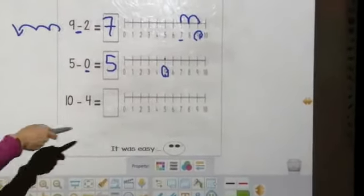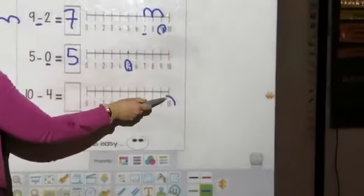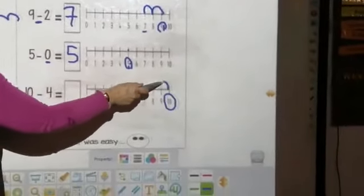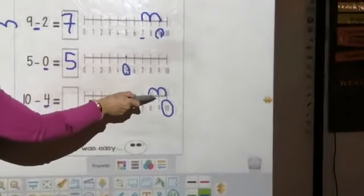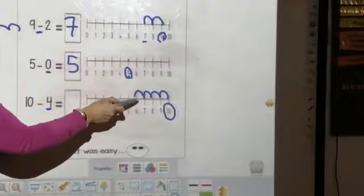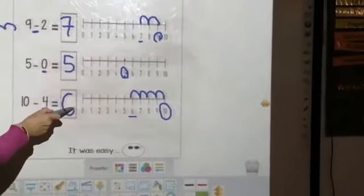10 minus 4. We have to circle the big number, which is 10. And we have to jump backward. How many steps? 4. So, 1, 2, 3, and 4. Where did we stop? We stopped at number 7.